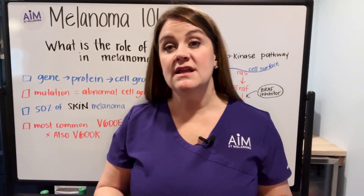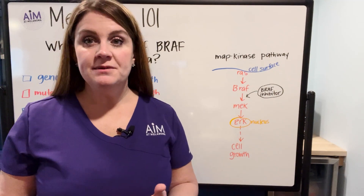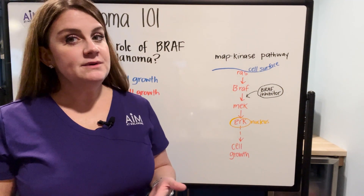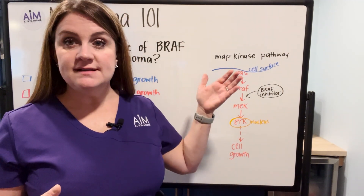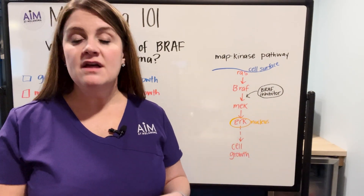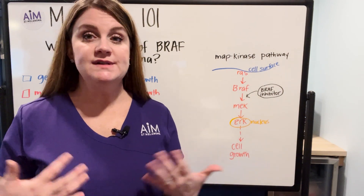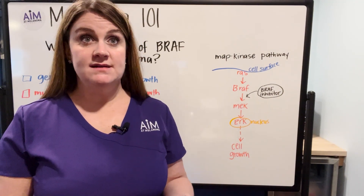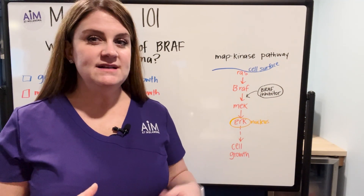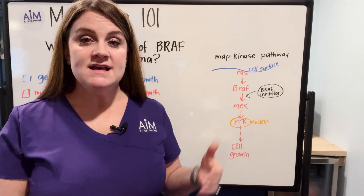In melanoma, about 50% of cutaneous or skin melanomas will have what's called a BRAF mutation, which means that this growth pathway is working abnormally or differently than intended. BRAF plays a central role in what's called the MAP kinase pathway, which starts at the cell surface and moves into the nucleus to tell the cell it's time to grow — keeping cells alive and healthy. In BRAF mutated melanomas, this pathway actually occurs more frequently.